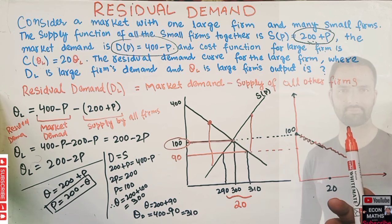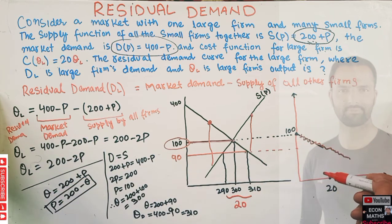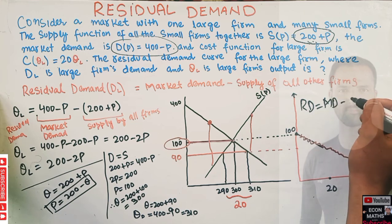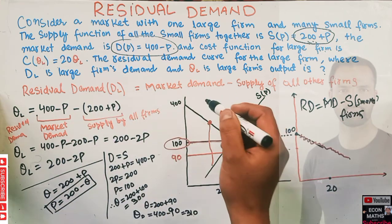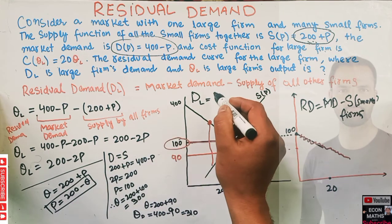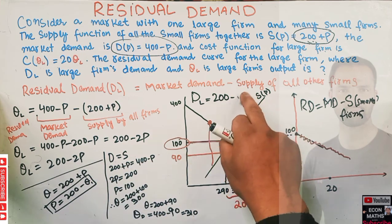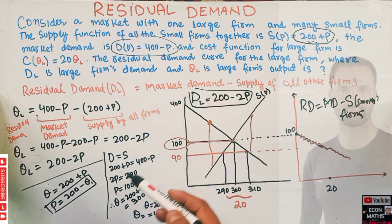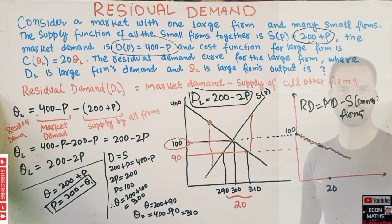In summary, residual demand is found by subtracting the supply of smaller firms from total market demand. In our case, residual demand = 200 − 2P, or equivalently Q_L = 200 − 2P. This is our final residual demand function for the large firm. I hope I made myself clear in this video — thank you.